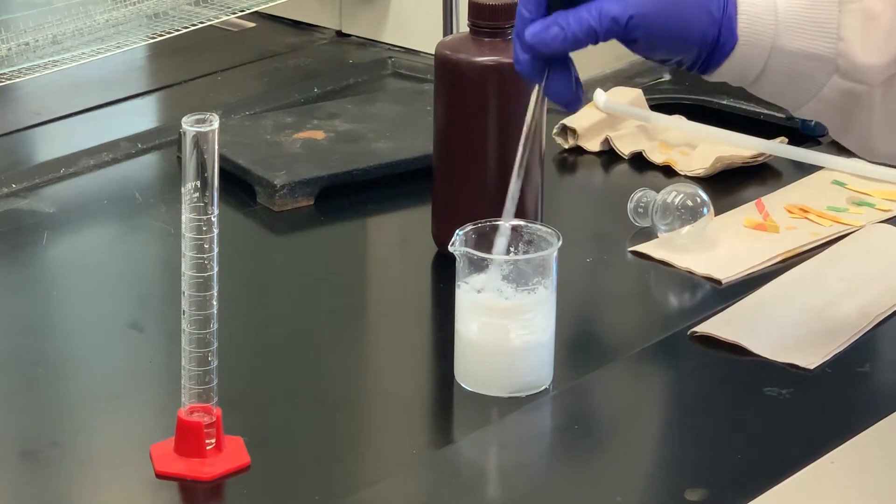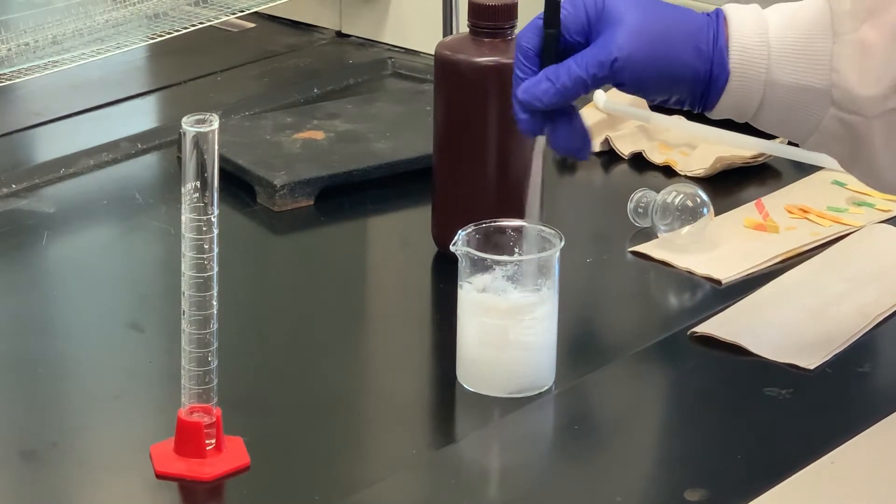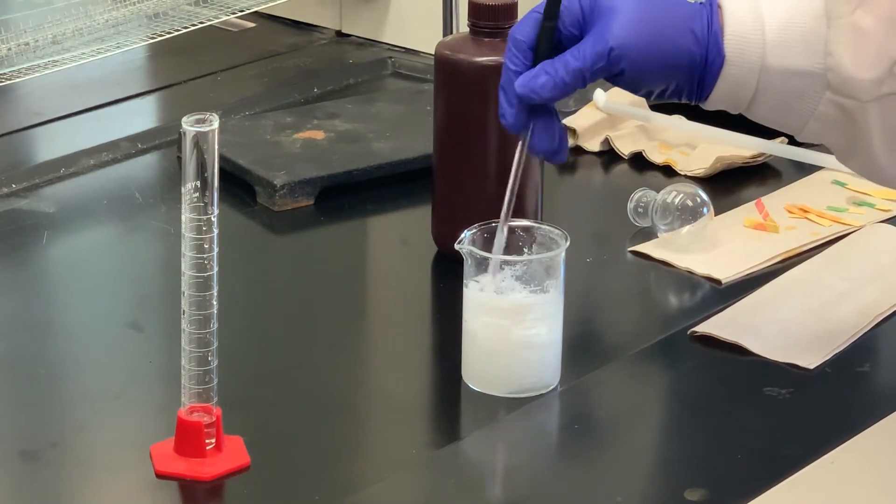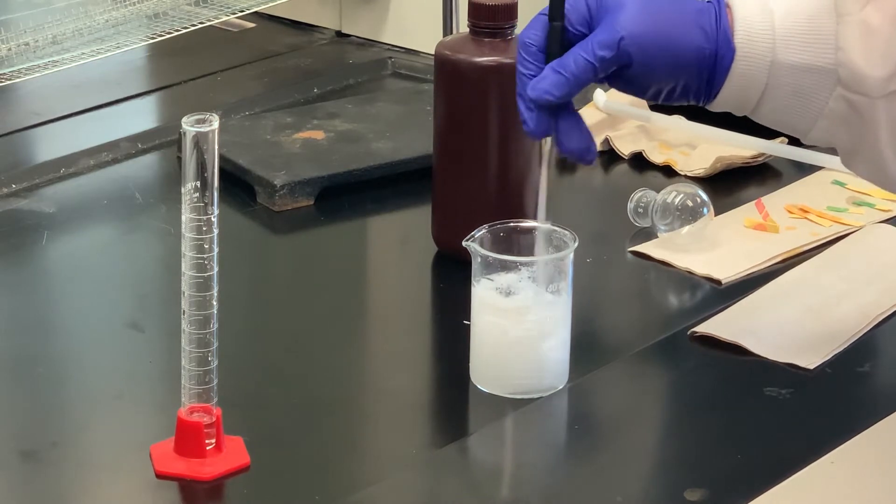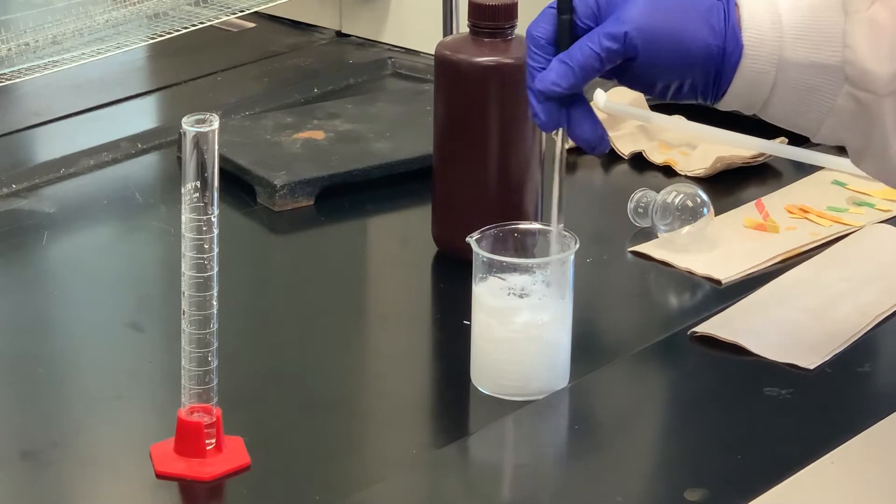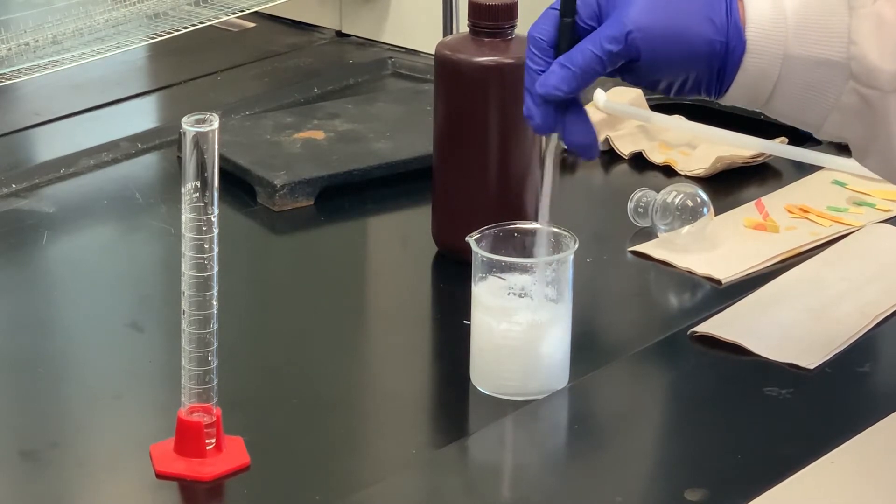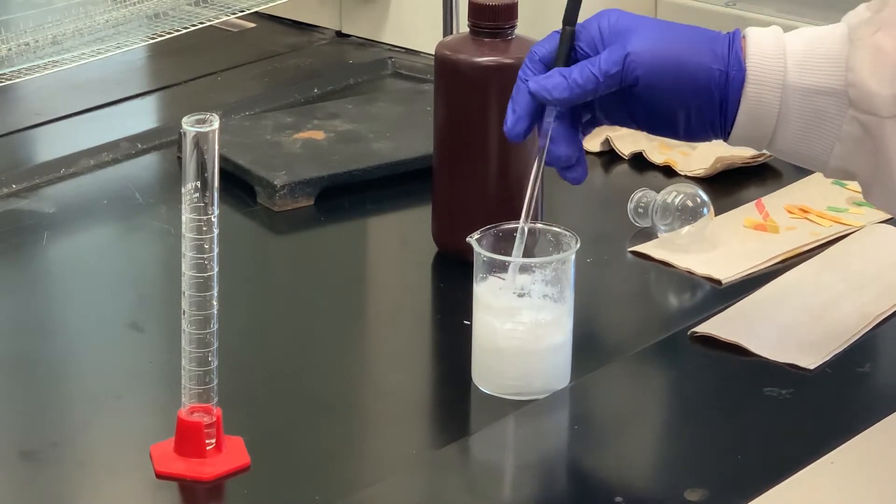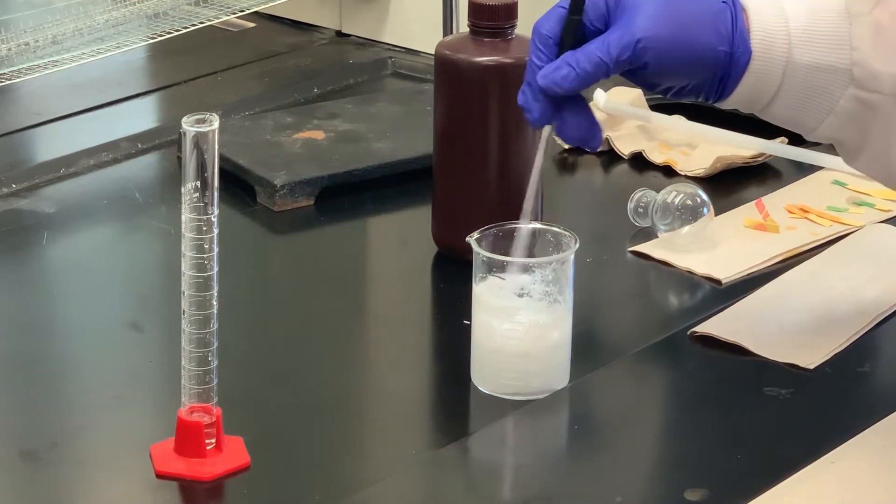And then what we want to do, we're going to filter this by vacuum filtration. And then wash it, after it's being filtered, we'll wash it with some cold water. And then we will take the solid that we collect, squeeze it through some filter paper, get a weight and a melting point.